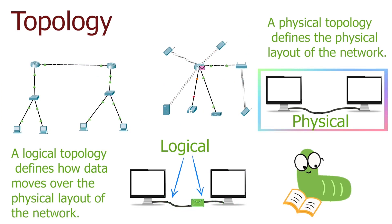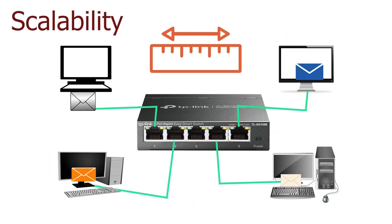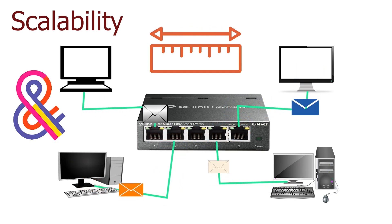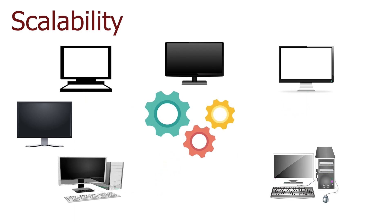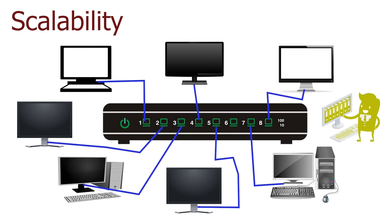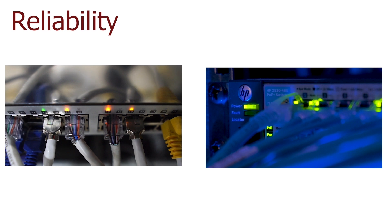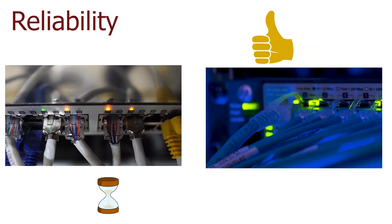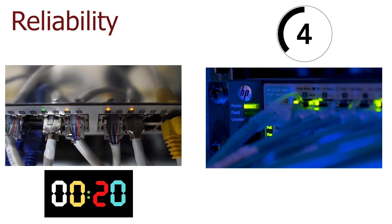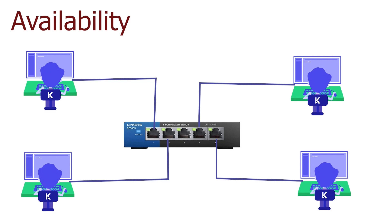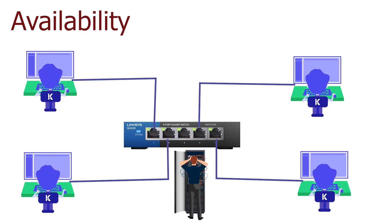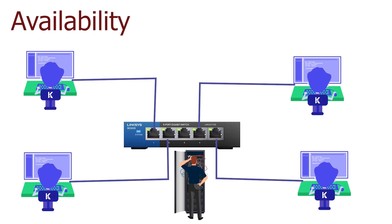Topology describes the physical and logical structure of the network, including the cabling layout and how data moves between components. Scalability defines how much room the network has for future growth — a network adaptable to new users, applications, and network components is a scalable network. For example, if a network has room for only one more PC and we want to add more, we must replace the switch with one having more ports. Reliability defines the ability of network components — a component that takes the least time to reach a functional state and works at full capability during peak time is reliable. Availability represents the time the network is available for users, excluding downtime from outages or scheduled maintenance. These are the network characteristics we need to understand at the beginning.